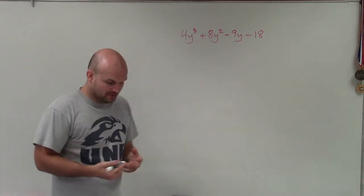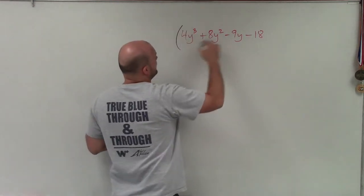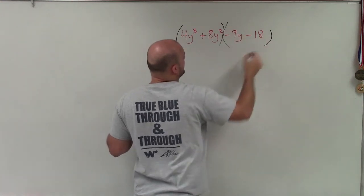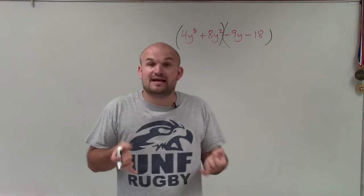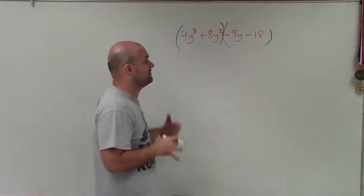But we're going to use grouping. And when we use grouping, all we're simply going to do is group our first two terms and our last two terms. Then we look at each of these groupings separately and we say, all right, what do I need to factor out the GCF out of each one?